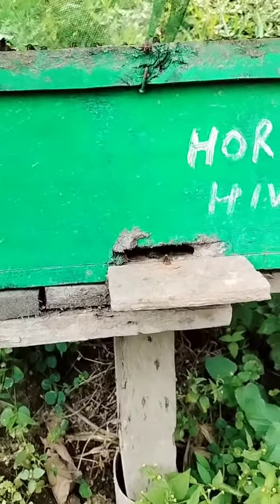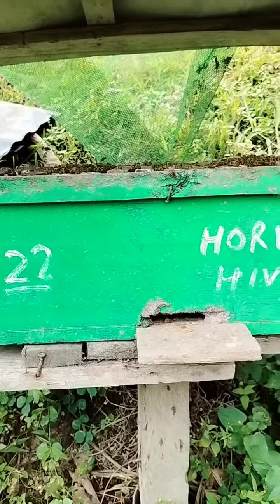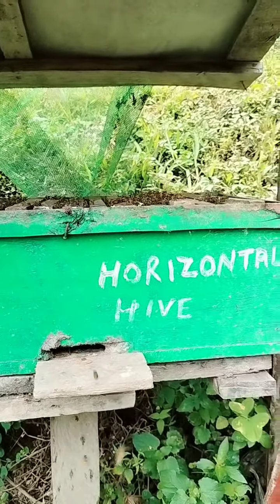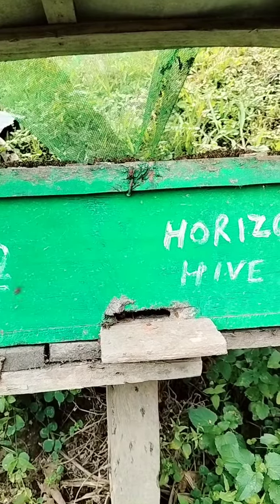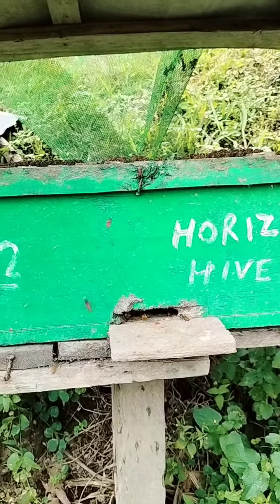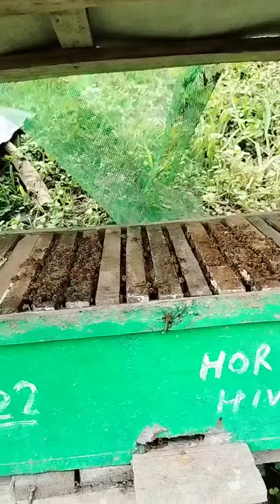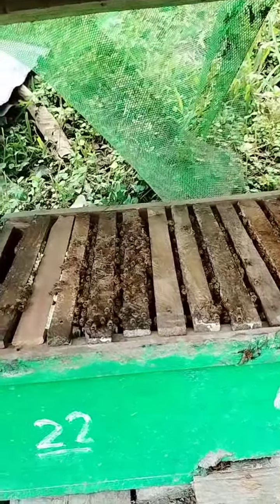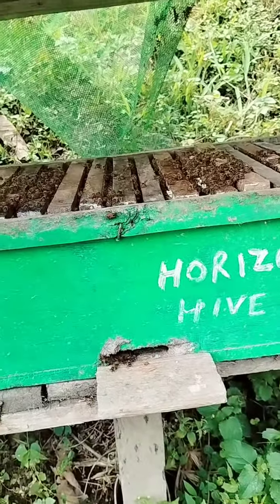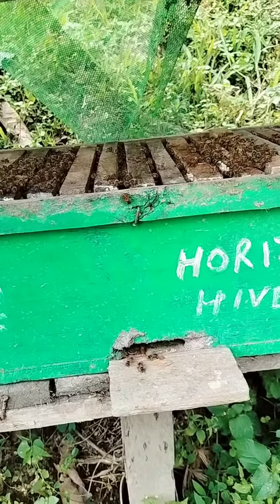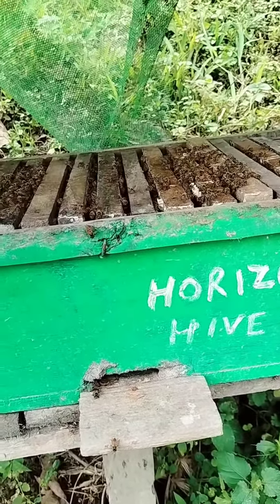We can see this here as a horizontal hive. This is about 3000 more. This is about 2 colonias. This is a horizontal hive. We can see this in our own house.